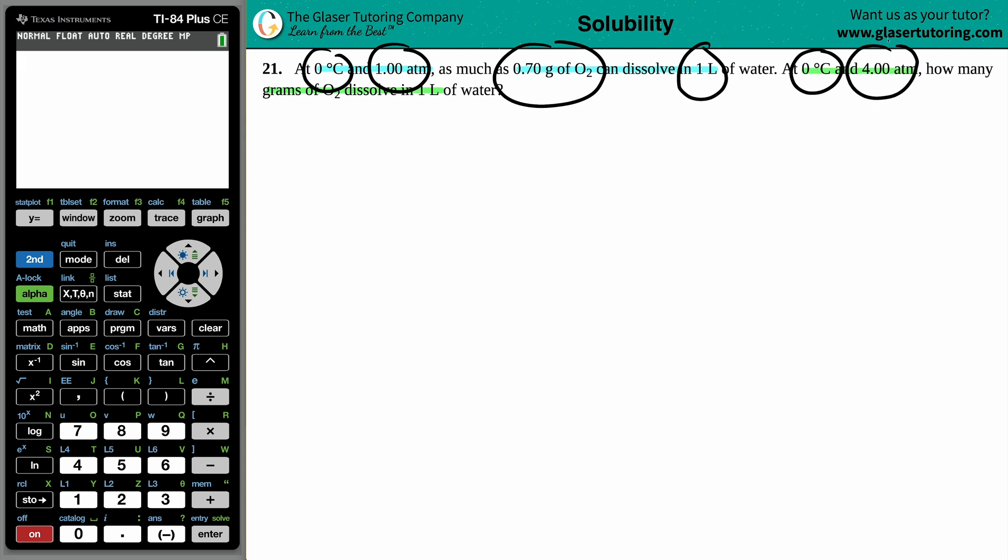Now it's 0 degrees Celsius for ATM, and they're asking for the number of grams of O2 dissolved in the one liter. Now in this case, whenever I see pressures and volumes and temperatures, and then they change, especially when I have pairs, right? I have one ATM, and then I have four ATMs. I have liters, we have temperature pressure.